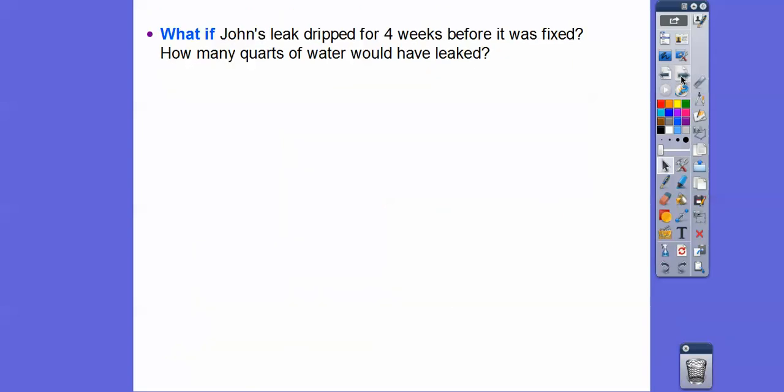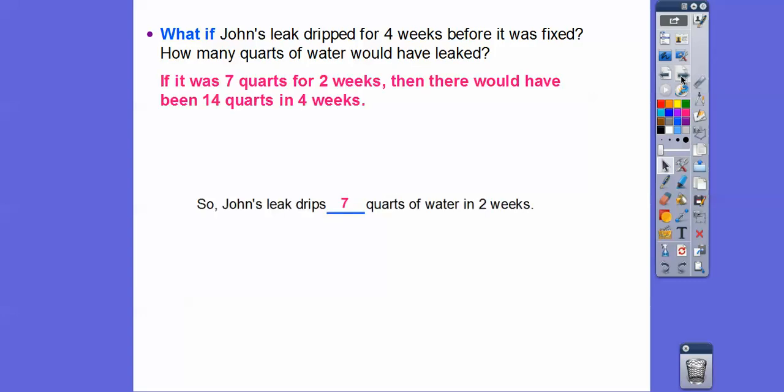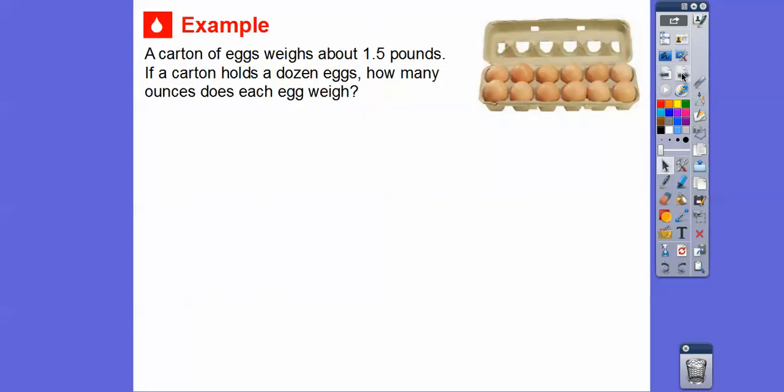What if John's leak dripped for four weeks before it was fixed instead of two weeks? How many quarts of water would have leaked? Well, if it was seven quarts in two weeks, then it would have to be double that because four weeks is double two weeks, so it would have to be double seven or 14 quarts, as long as it leaked the same amount.